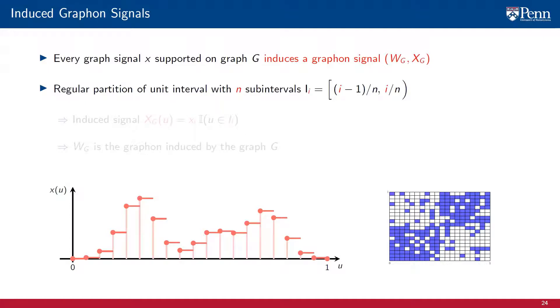To obtain the induced graphon signal, we consider the regular partition of the unit interval with N nodes, the same partition we use for the induced graphon. We have N subintervals that are of equal width 1 over N. We obtain the signal component of the induced graphon signal by making X_G(u) equal to x_i for all the arguments u that lie in the ith interval of this regular partition.